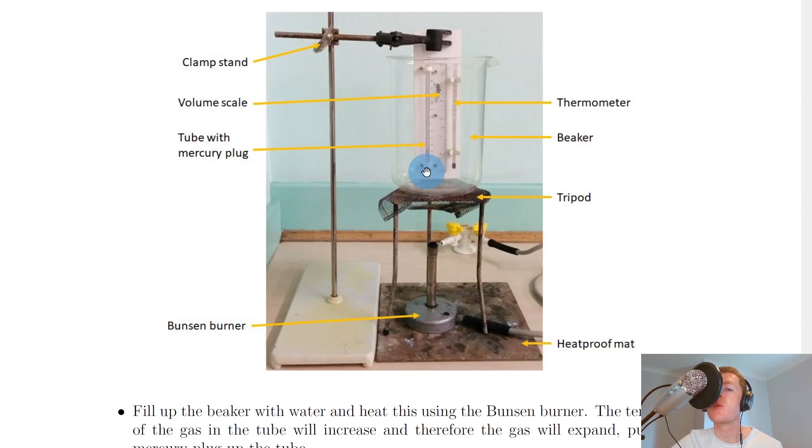The temperature of the gas in the tube will increase and therefore the gas will expand, pushing the mercury plug up the tube. The mercury plug would be towards the bottom to begin with. But as the temperature of the surrounding water increases, that causes the temperature of the gas inside the tube to increase, and the mercury plug is moved upwards because the gas is expanding.